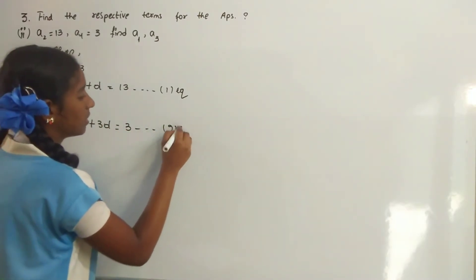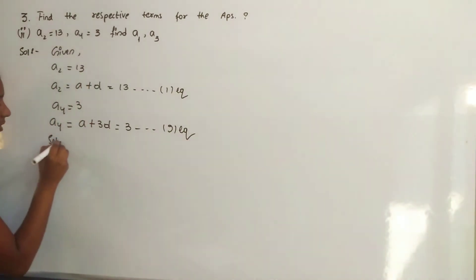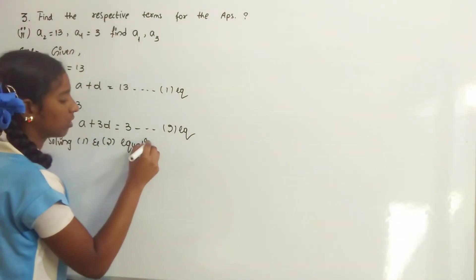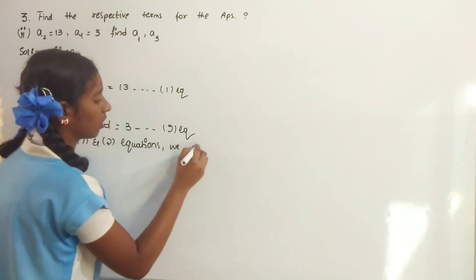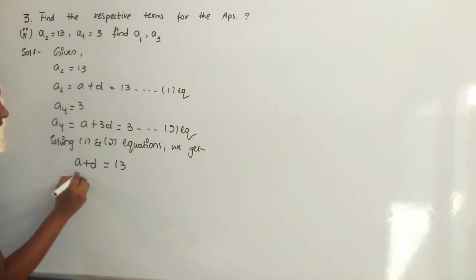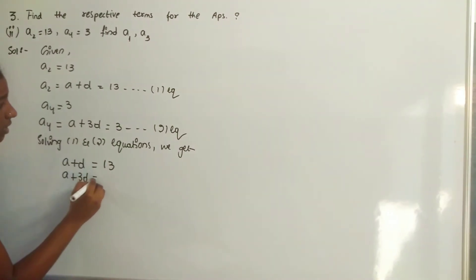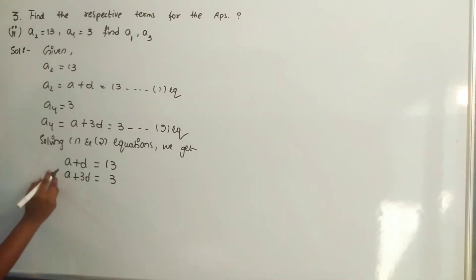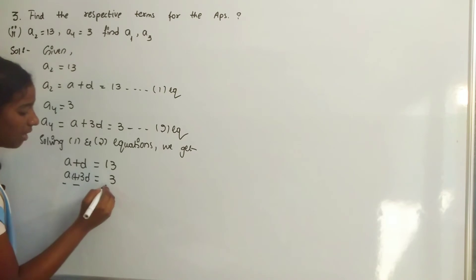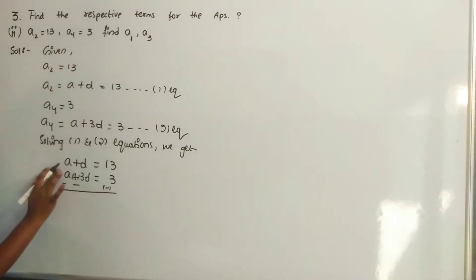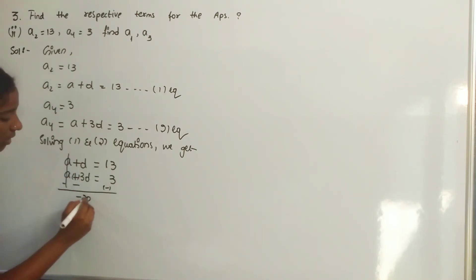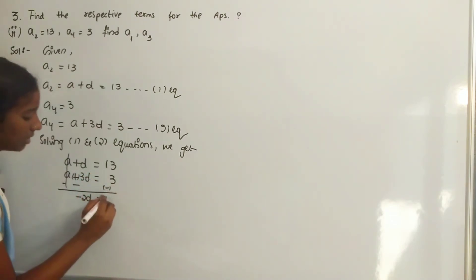Let it be the second equation. Solving equations 1 and 2: A plus D is equal to 13, and A plus 3D is equal to 3. We are changing the signs — there is plus, so we are taking minus. Minus and minus. Plus A and minus A gets cancelled. Plus D and minus 3D gives minus 2D is equal to 13 minus 3, that is 10.